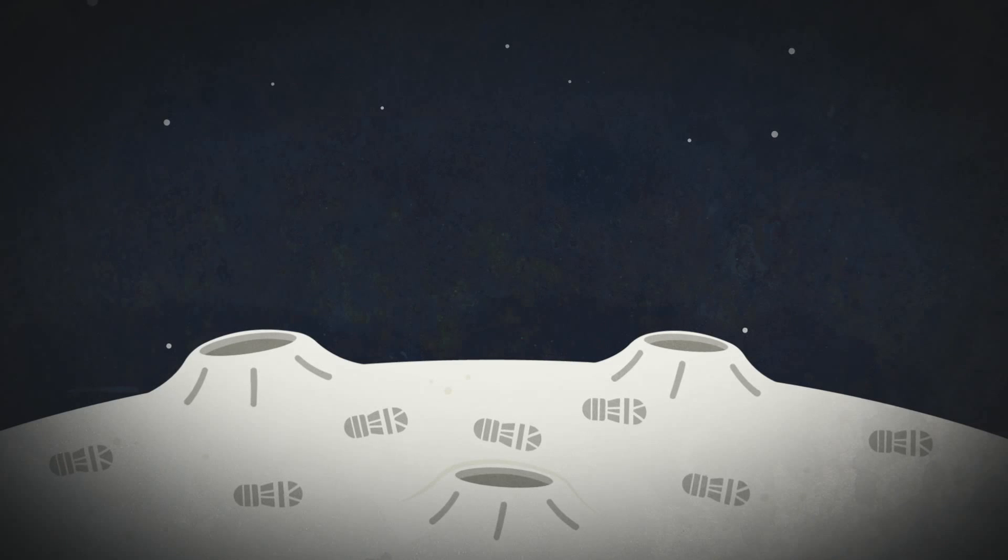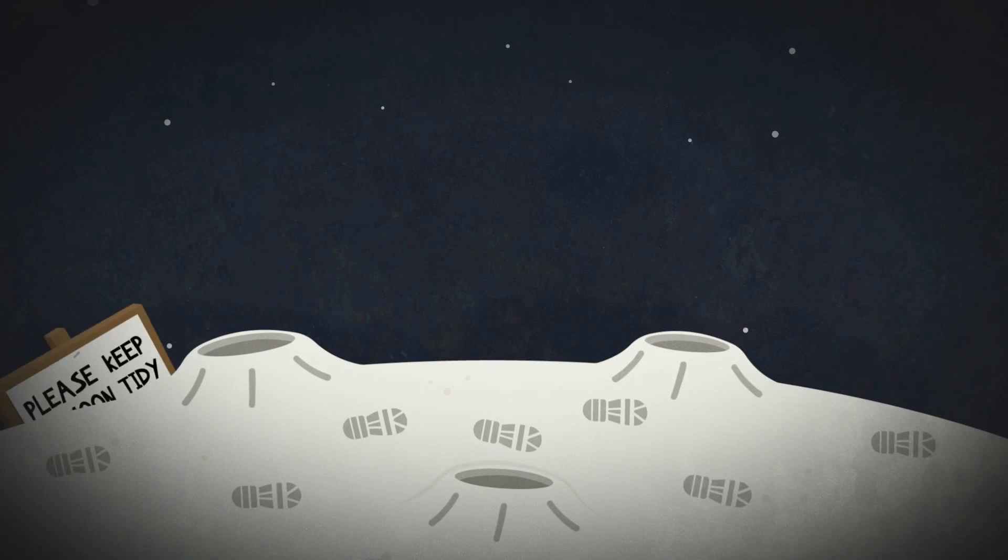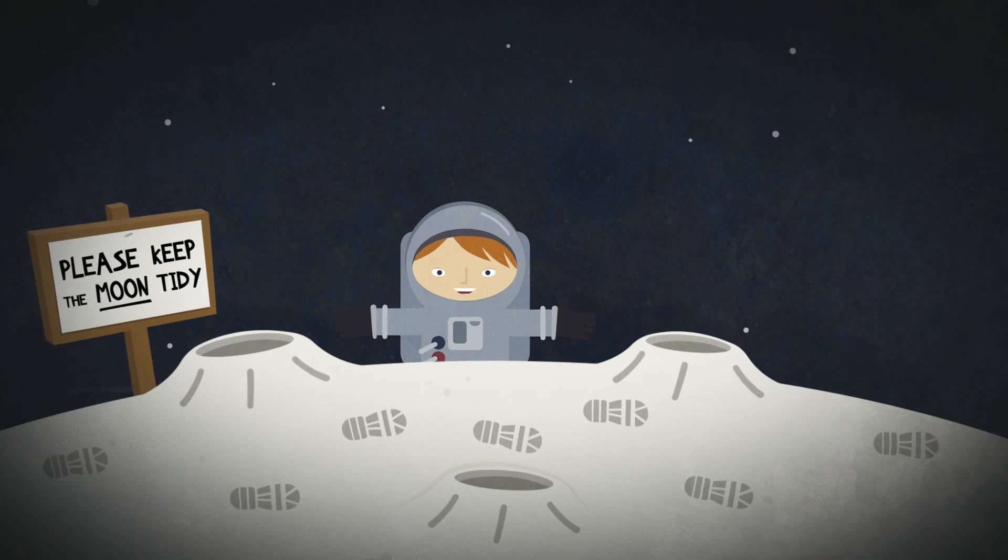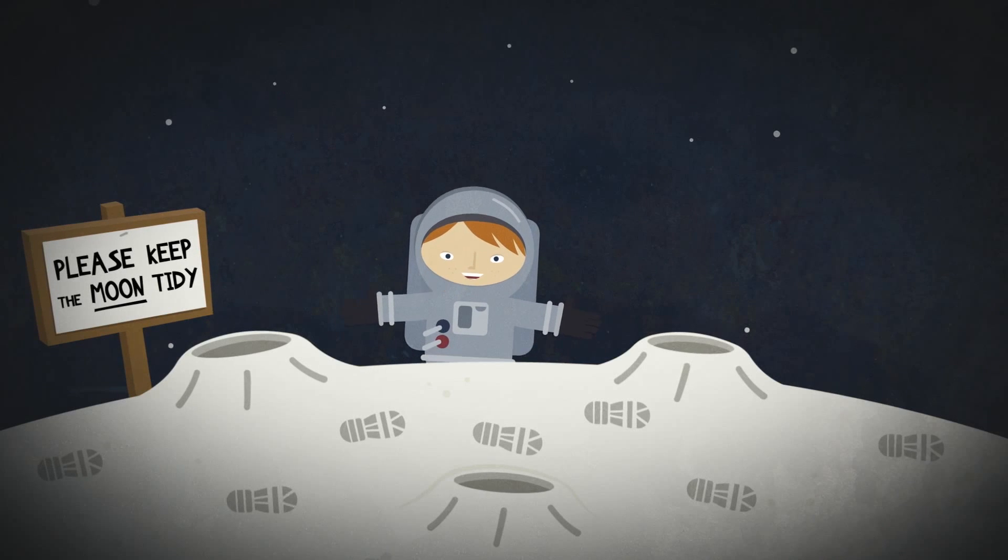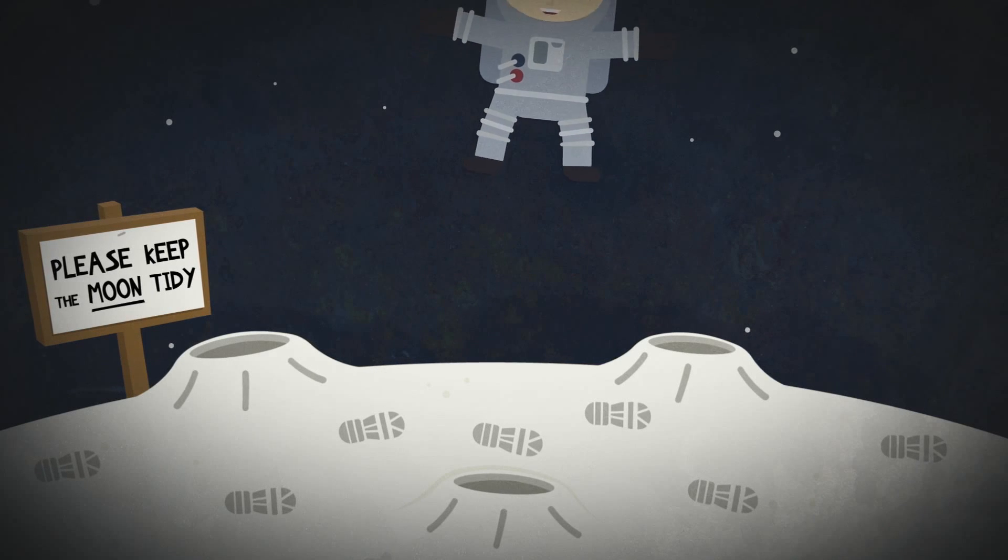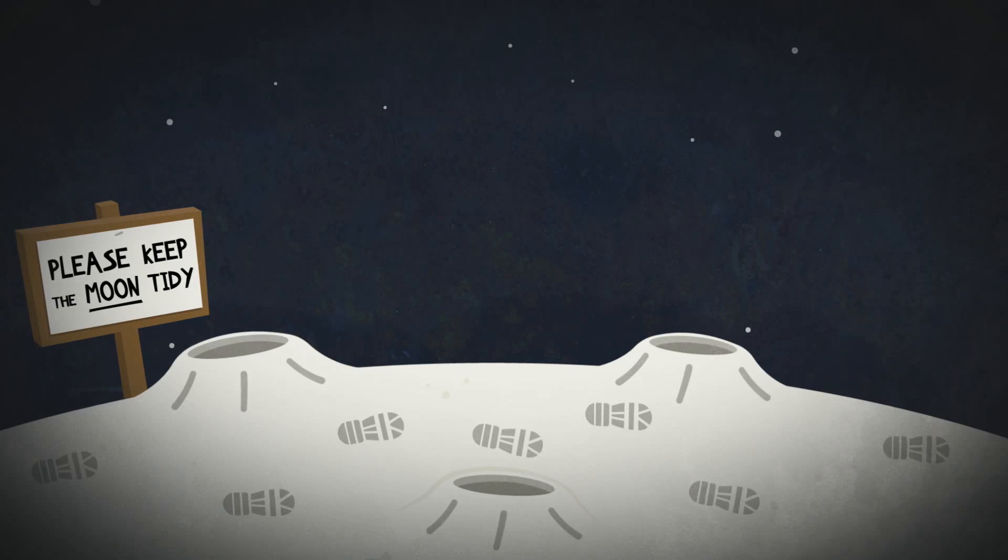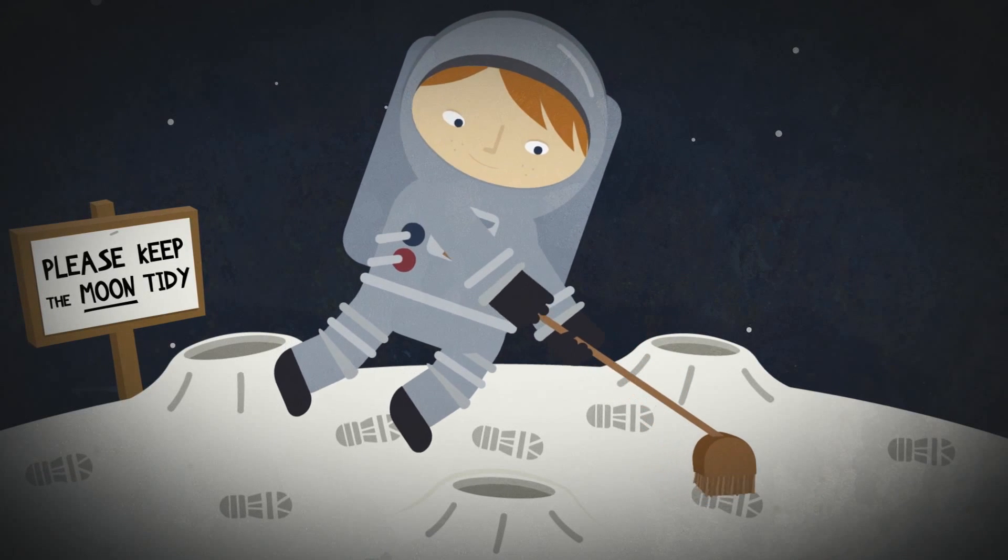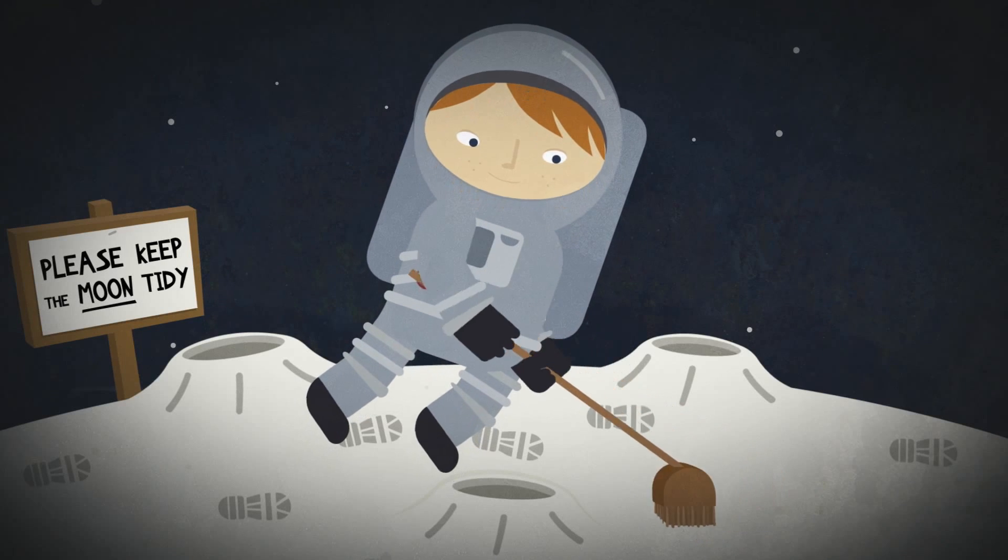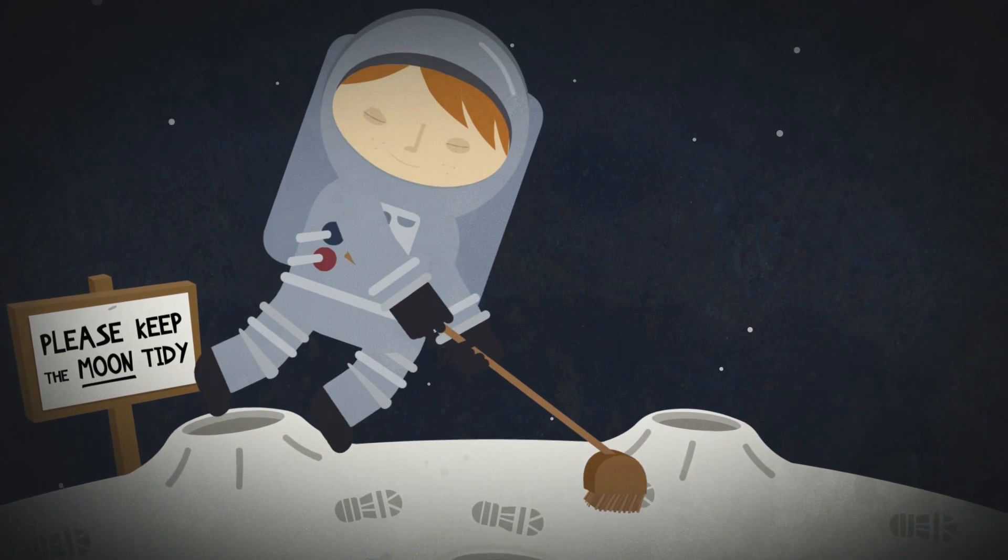Next, the footprints that astronauts left behind on the moon will be there forever. And it isn't because they didn't wipe their feet. The moon has no atmosphere, and that means it doesn't have any weather either. So there's no wind or rain to blow and wash away the tracks. Next time, I'd suggest taking a brush.